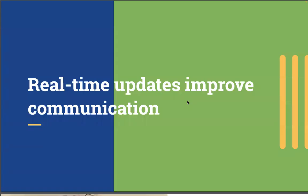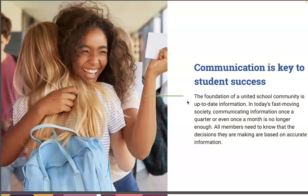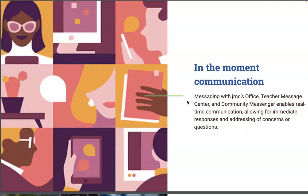We're all about efficiency and real-time updates to improve communication. The foundation of a unified school community is up-to-date information. In today's fast-moving society, communicating information once a quarter or even a month is no longer enough. All members need to know that the decisions they are making are based on accurate information. Messaging in JMC's office, teacher message center, and community messenger enables real-time communication, allowing for immediate responses and addressing concerns and questions.